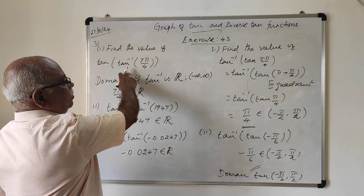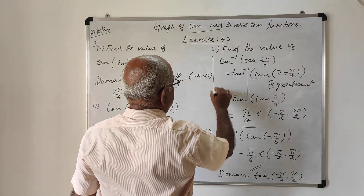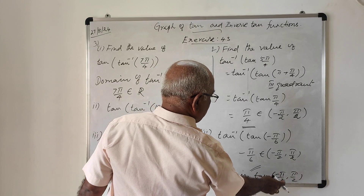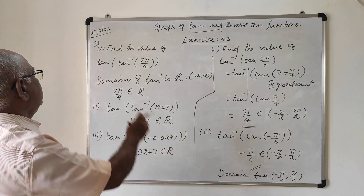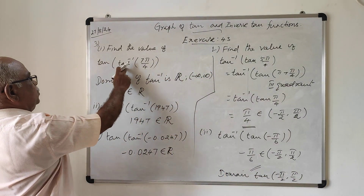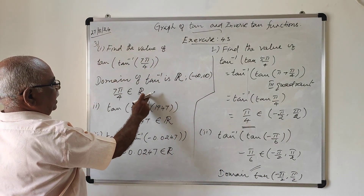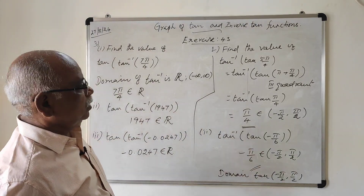So we have solved the problems involving tan(tan⁻¹) and tan⁻¹(tan). If you consider tan⁻¹(tan x), the domain to check is (-π/2, π/2). For tan(tan⁻¹ x), you consider the domain of tan⁻¹, which is the real line.